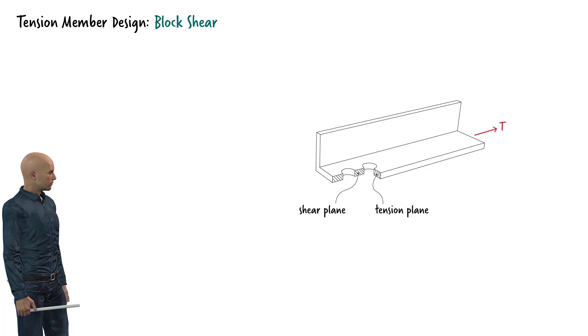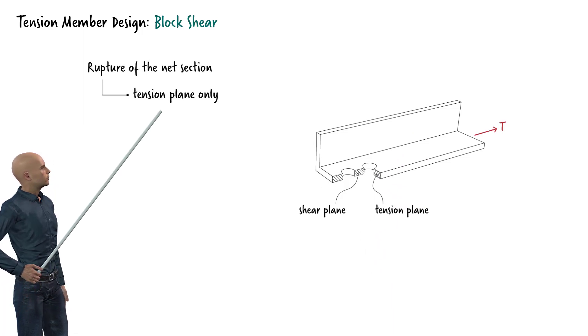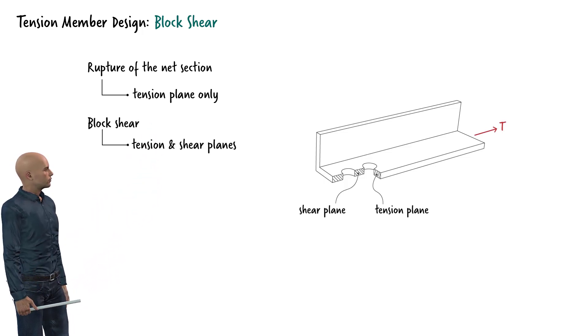This mode of failure is different from the rupture of the net section. The net section rupture is a failure along the tension plane only. Block shear is a simultaneous failure along two planes, the tension plane and the shear plane.